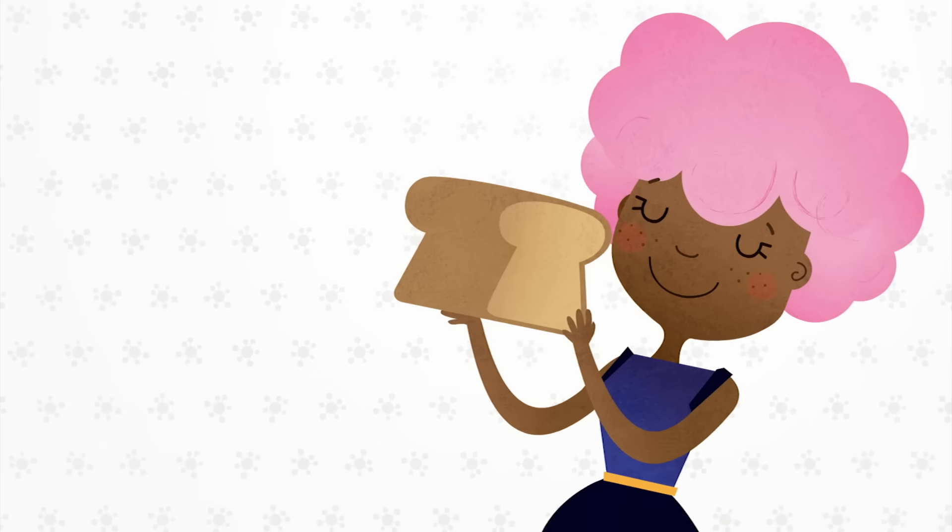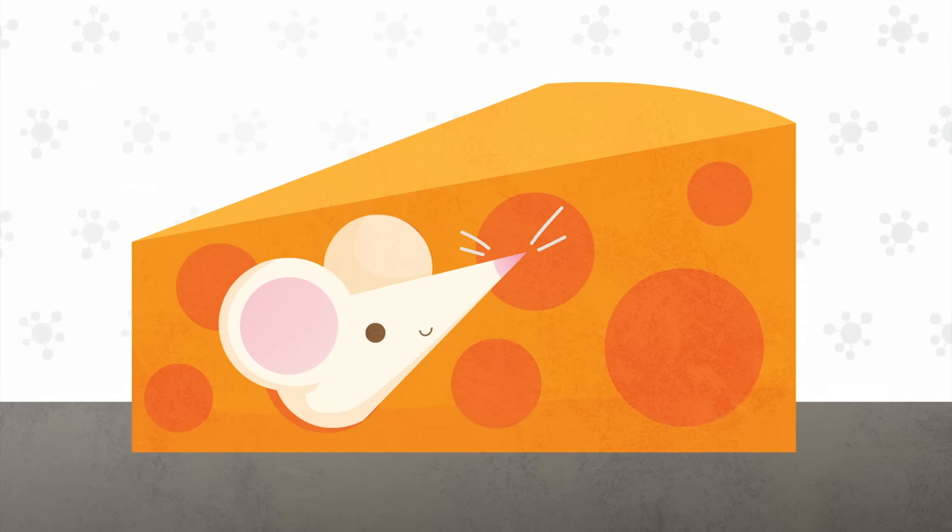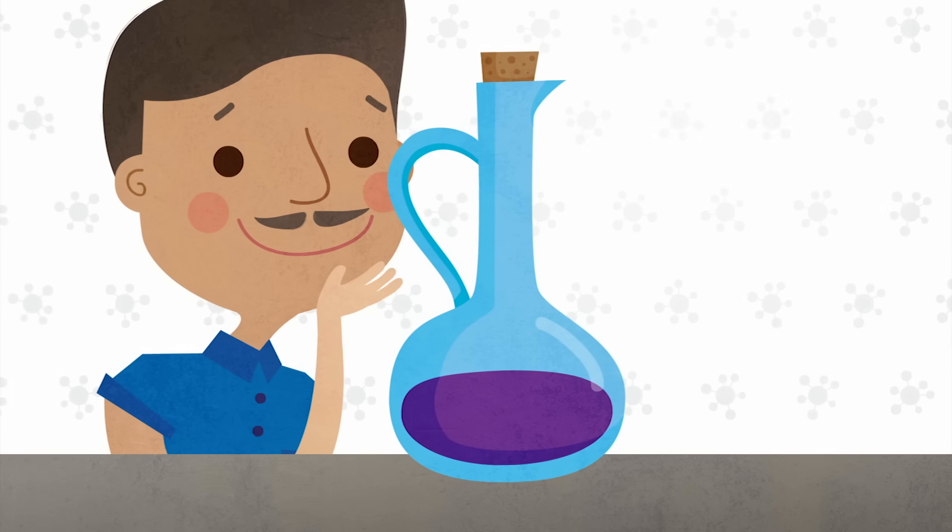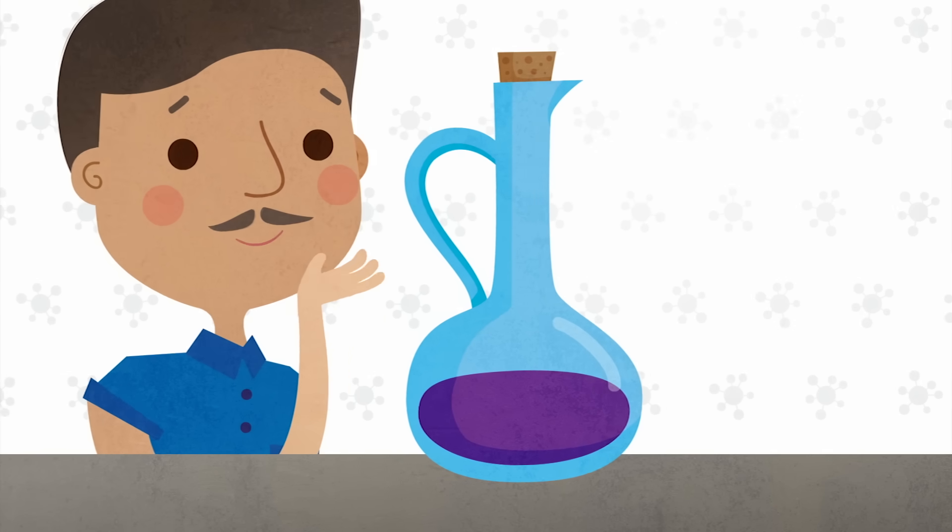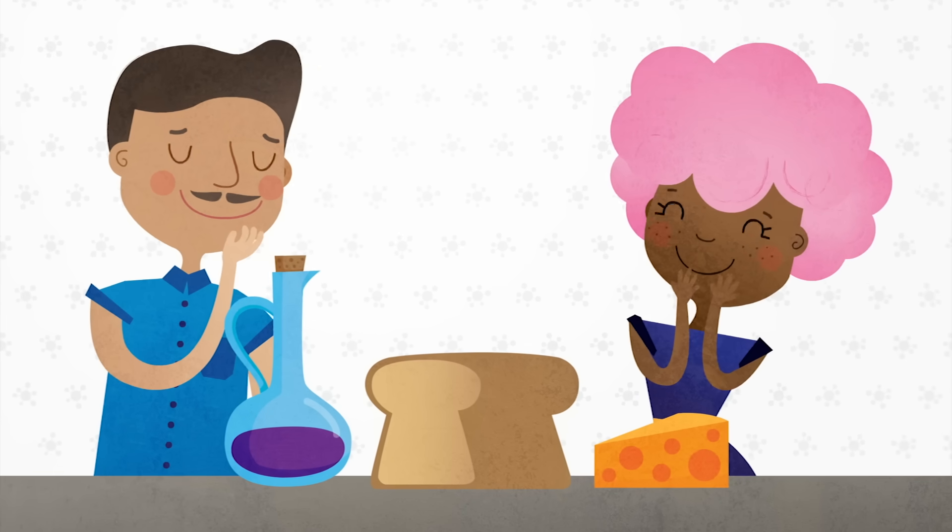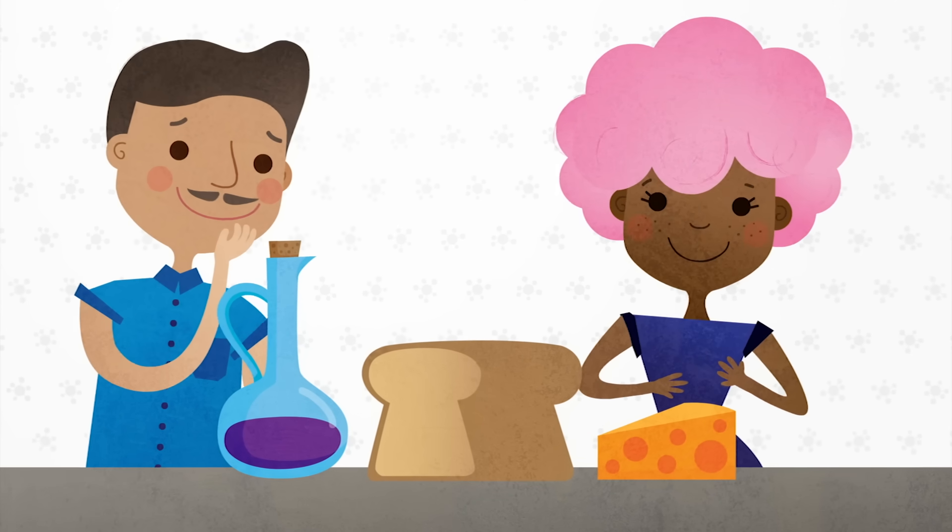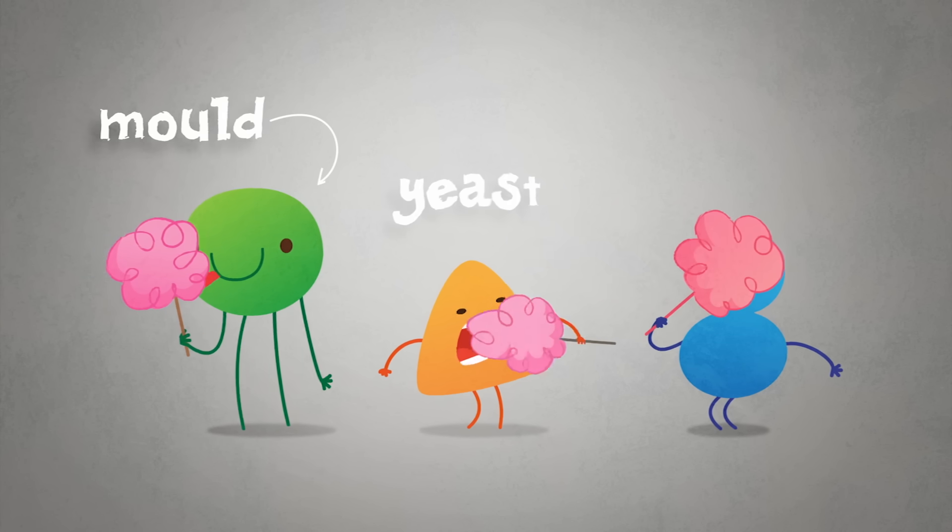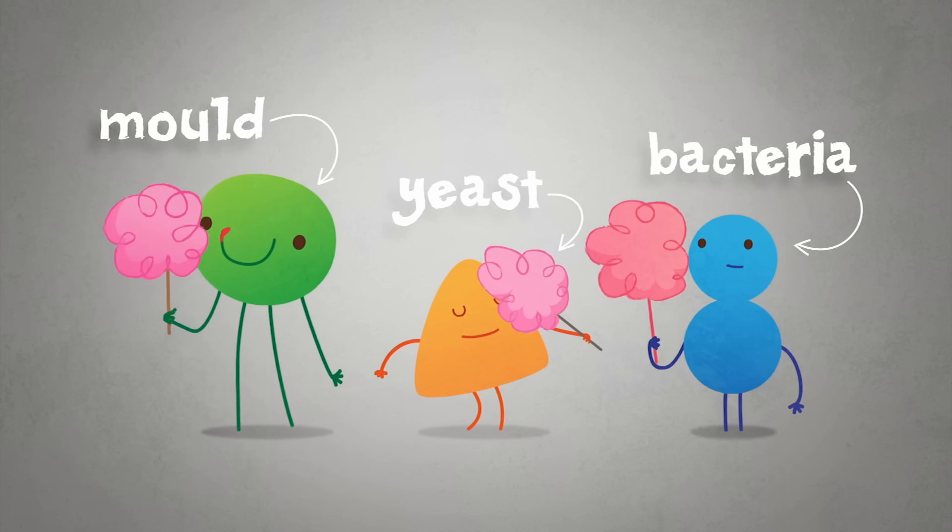Where does bread get its fluffiness, Swiss cheese its holes, and what makes vinegar so sour? These foods may taste completely different, but all of these phenomena come from tiny organisms chowing down on sugar and belching up some culinary byproducts.